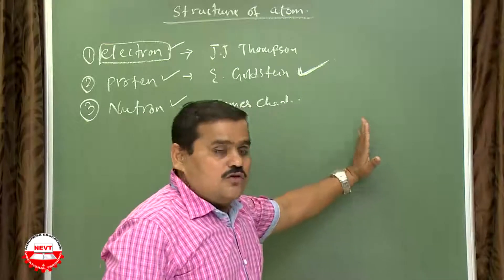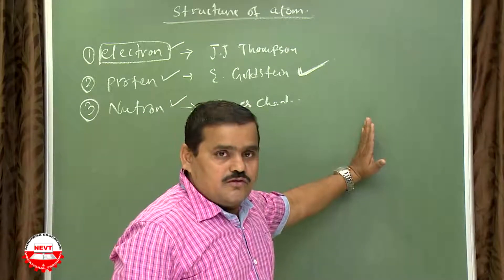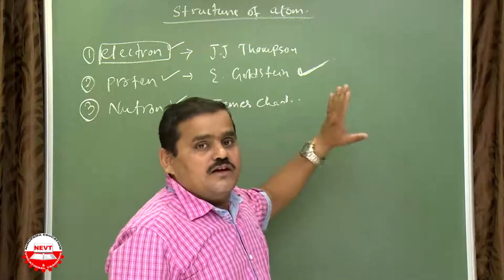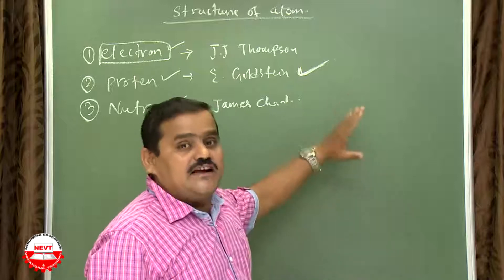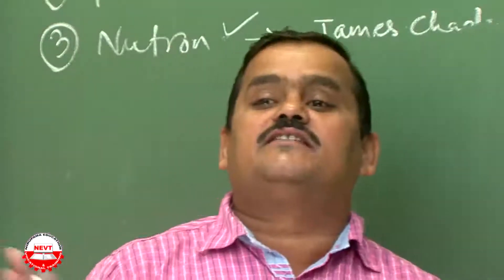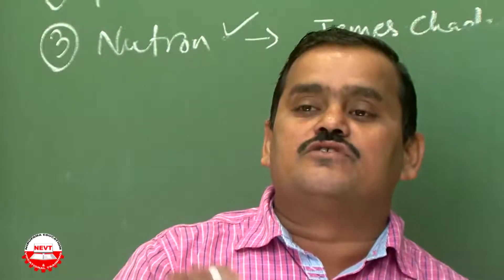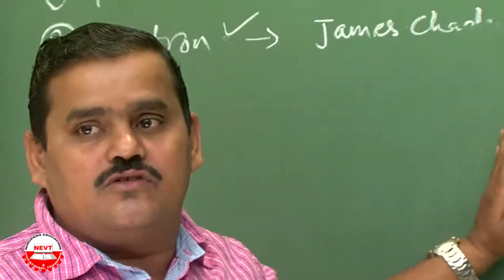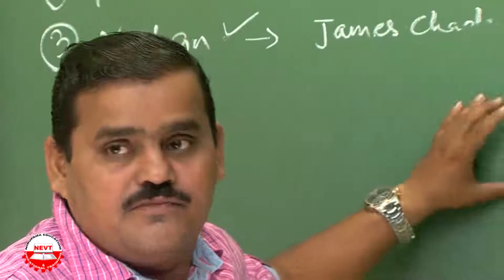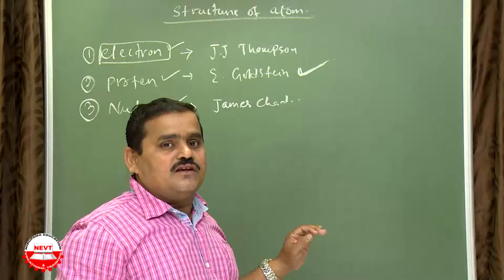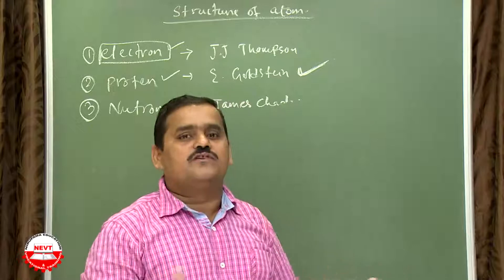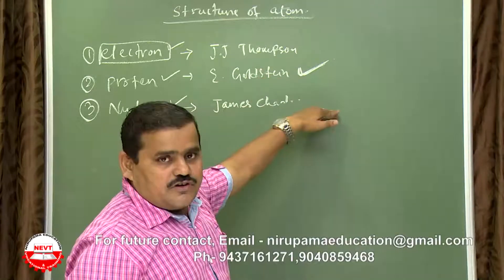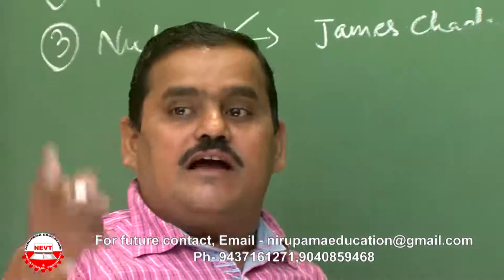Goldstein repeated the same discharge tube experiment, but instead of a solid anode he used a perforated or porous anode, and instead of vacuum he took hydrogen gas inside the tube. When he applied 10,000 volts or more, he noticed a beam of rays coming from the anode towards the cathode in parallel form. These are therefore also known as canal rays or anode rays, and they consist of protons.